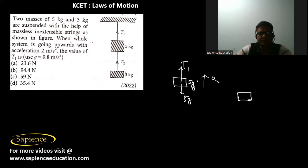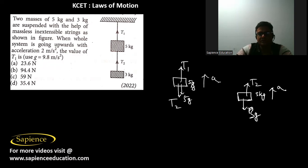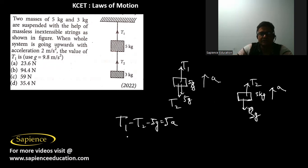Drawing the free body diagram: for the 5 kg block, T1 acts upward and 5g acts downward; for the 3 kg block, T2 acts upward and 3g acts downward, with acceleration a upward. Therefore: T1 − T2 − 5g = 5a, and T2 − 3g = 3a.